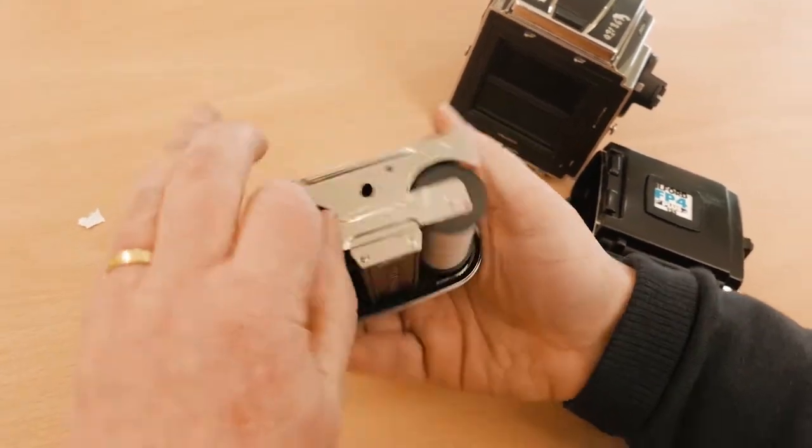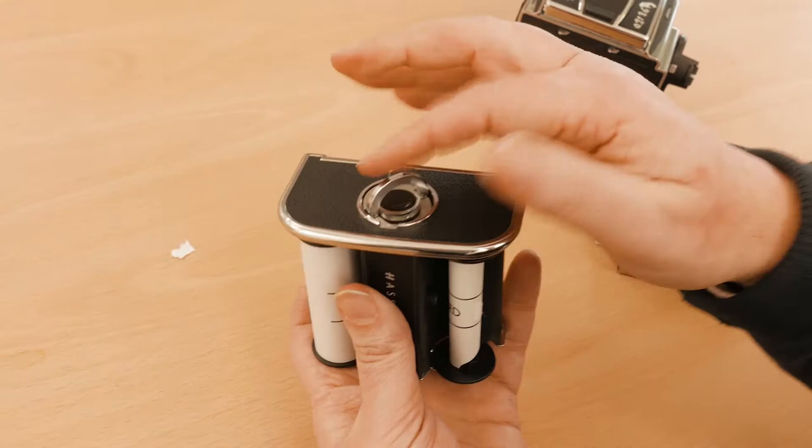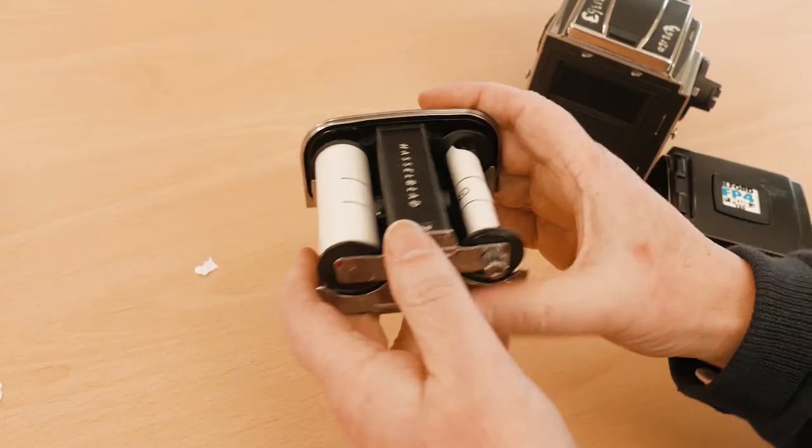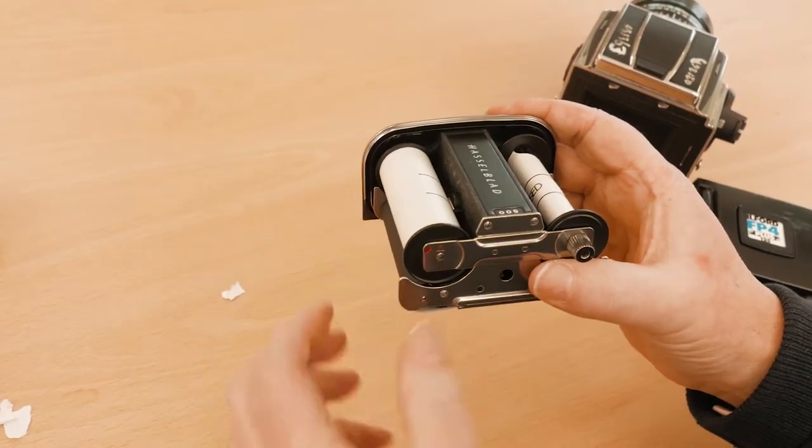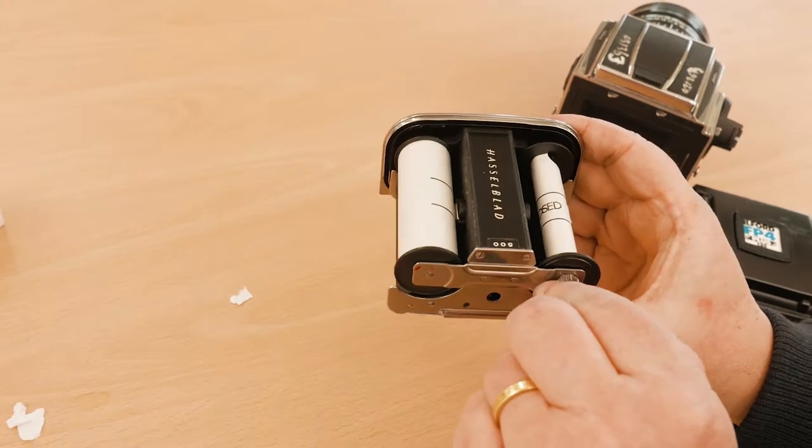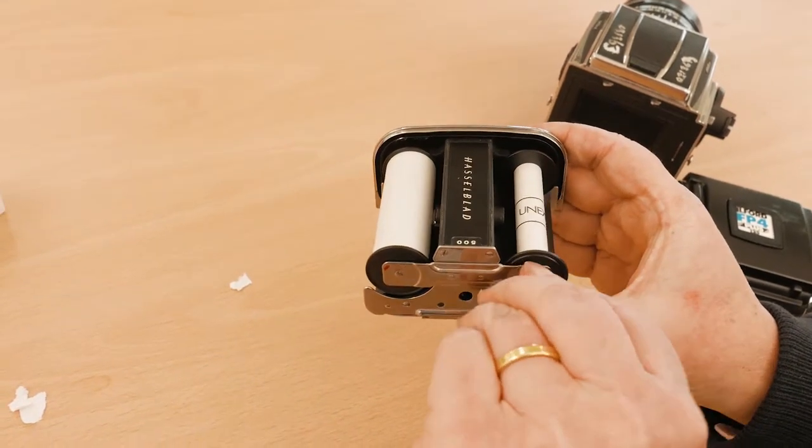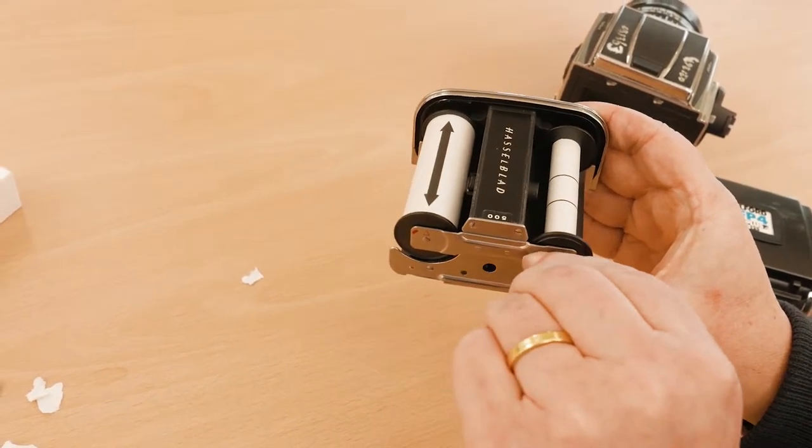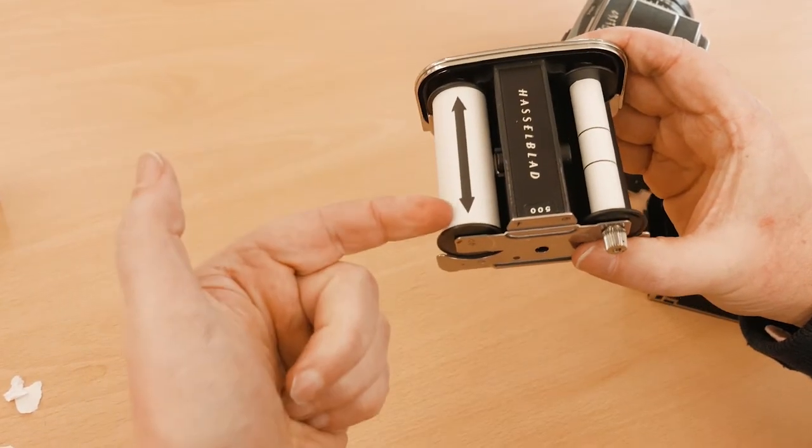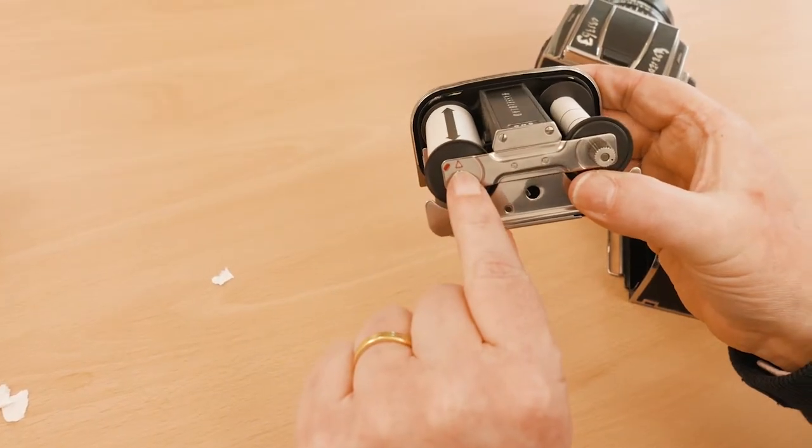Once I've taken up the tension, I'm going to release this again. That will allow me to turn the actual paper itself and I turn it until I get the black arrow in line with the red triangle.